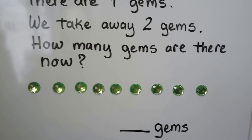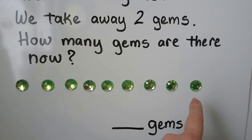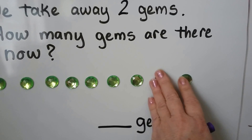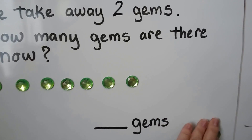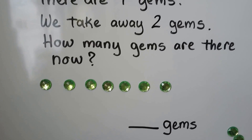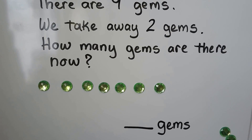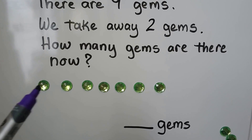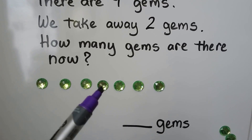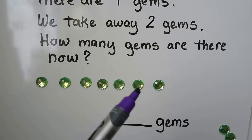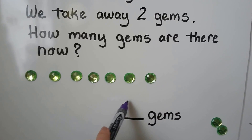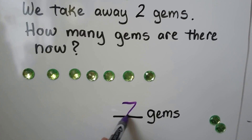We take two away: one, two. We take these two away. How many gems are there now? One, two, three, four, five, six, seven. There are seven gems.